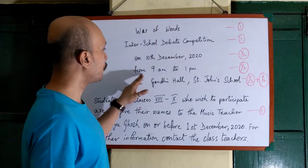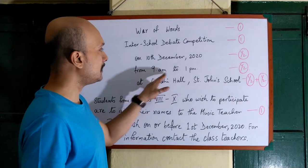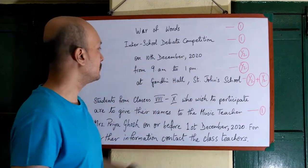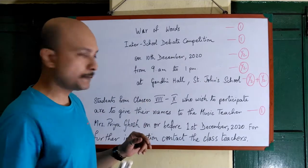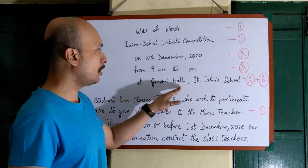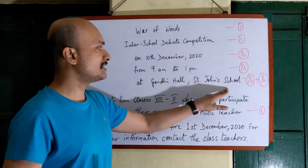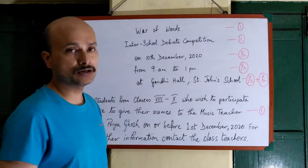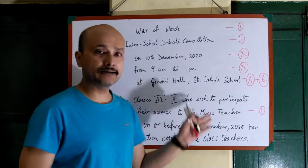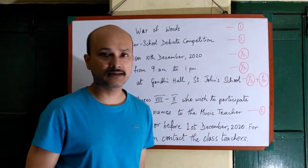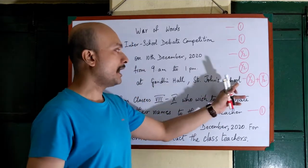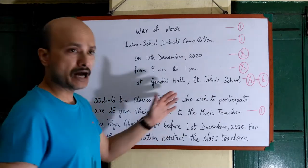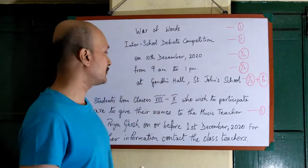Now, after the date, moving on to time: from 9am to 1pm — this is our time. Now the location, the place: at Gandhi Hall, St. John's School. The name of the school is very important. Do not only write the name of the hall or auditorium — no, you have to put a comma and write the name of the school. Why it is necessary, I will come to that later.